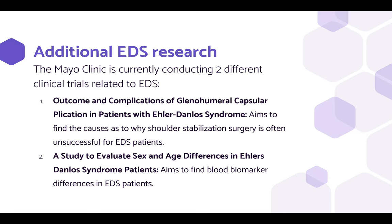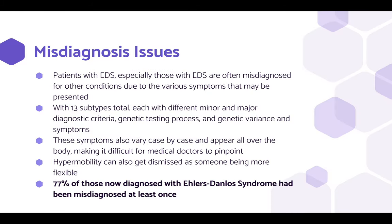The Mayo Clinic is currently conducting two different clinical studies related to EDS. The first one is more specific and deals with EDS patients who have had unsuccessful shoulder surgery, whereas the second one, taking place at UF Health Jacksonville, aims to find blood and serum biomarker differences between EDS patients. A common issue with EDS is misdiagnosis. Patients with EDS are often misdiagnosed for other conditions due to the various symptoms that may be presented. With 13 subtypes total, each with different minor and major diagnostic criteria, genetic testing processes, and genetic variants in symptoms, these symptoms also vary case by case and appear all over the body, making it difficult for medical doctors to pinpoint. Hypermobility can also get dismissed as someone being more flexible. 77% of those now diagnosed with EDS had been misdiagnosed at least once.